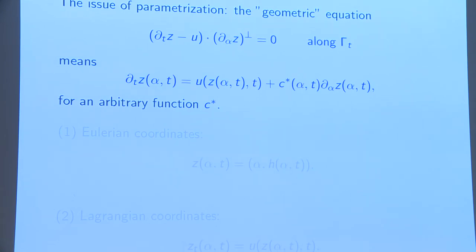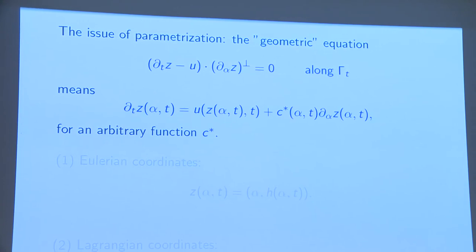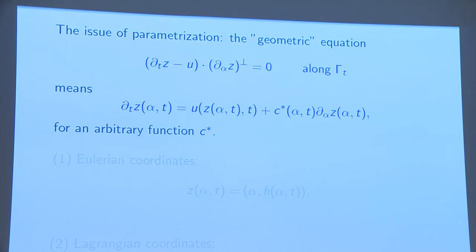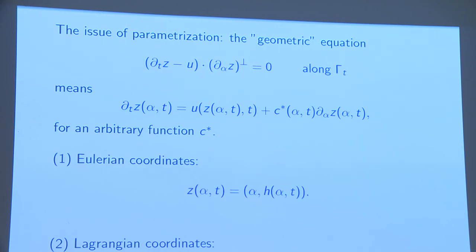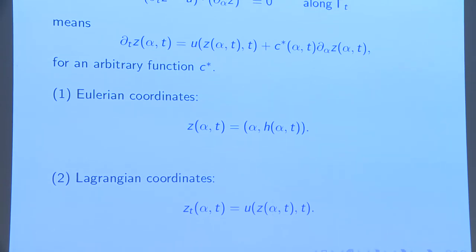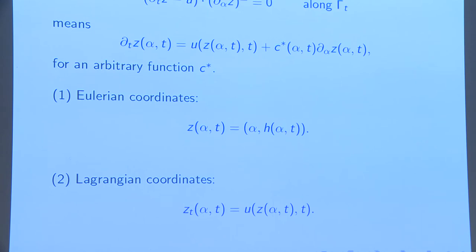There is one remaining slight imprecision in these equations: the choice of coordinates. The exact condition is that D_T Z minus some velocity must be tangent to the interface. One can make a more precise condition by writing D_T Z equals u plus a constant times d_alpha Z — this picks a vector in the tangent space. The two typical coordinates are Eulerian or Lagrangian; in Lagrangian coordinates, D_T Z equals u exactly, so the constant is zero.